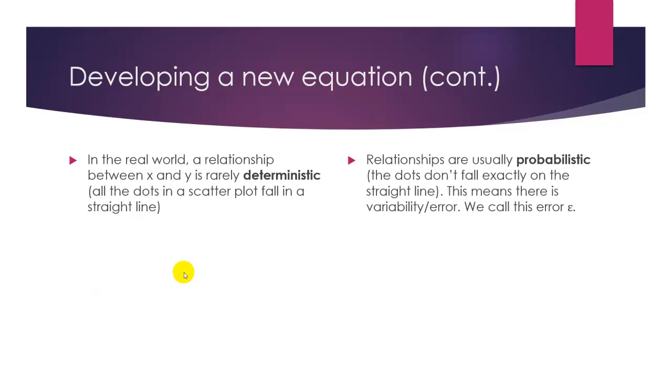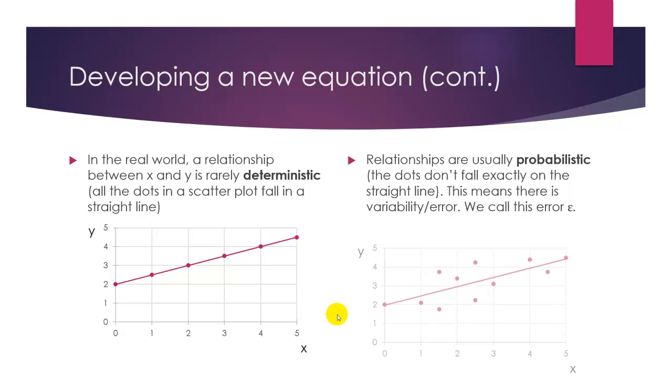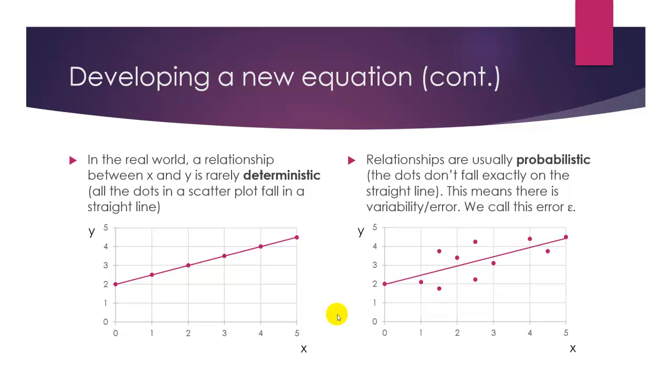So far, we've explored only deterministic relationships between x and y, where y can be perfectly modeled with x. This is demonstrated in this graph, with all the points falling perfectly in a straight line. When modeling real-world scenarios, this is rarely the case, and you usually will have a probabilistic relationship between x and y, meaning that there is variability or error. This is because every person is different and some will be above average and some will be below.